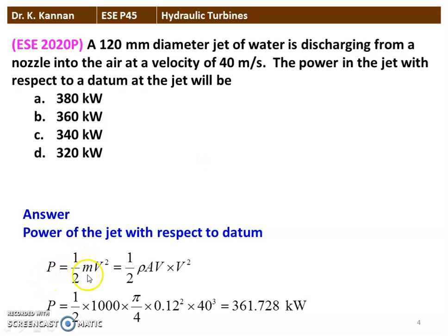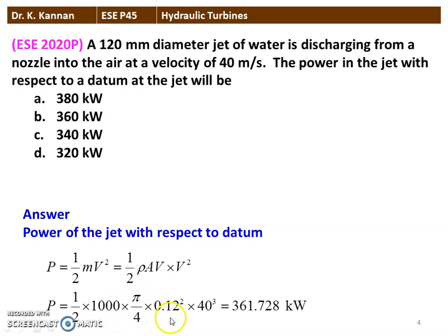P = ½Mv², the kinetic energy of the jet, where M = ρAV. Rho is the density, A is the cross-sectional area of the jet, and V is the velocity of the water. Substituting: ½ × 1000 × (π/4) × 0.12² × 40³ = 361.728 kW. The approximate answer is option B, 360 kW.